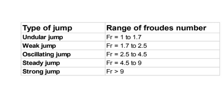So if Froude number is greater than 1, a hydraulic jump has occurred. Now let us classify the type of jump based on the range of Froude's number. If Froude number lies between 1 to 1.7, it is called an undular jump. If Froude number lies between 1.7 to 2.5, it is called a weak jump.